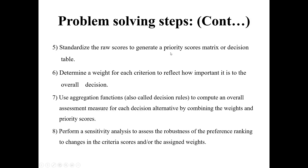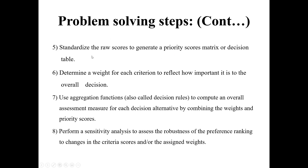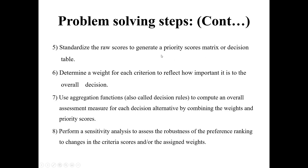Next, standardize the raw scores to generate a priority score matrix — we normalize and standardize the data. Then we determine a weight for each criterion to reflect how important it is to the overall decision, using data collected from experts. We then use an aggregation function — also called a decision rule — to compute an overall assessment measure for each decision alternative by combining the weights and priority scores. Finally, we perform a sensitivity analysis to check flexibility: if we increase or decrease a weight for a specific criterion against an alternative, what is the impact? This checks the robustness of the preference ranking to changes in criterion scores and weight assignments.